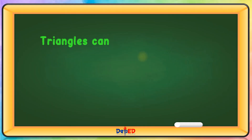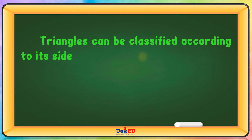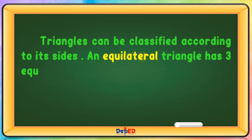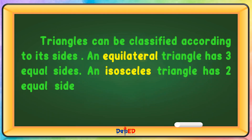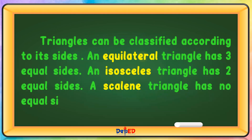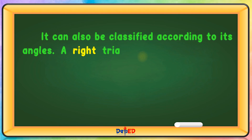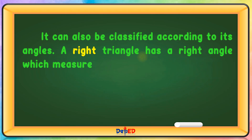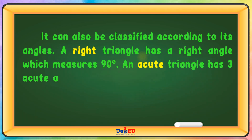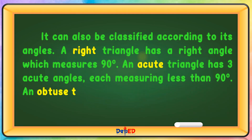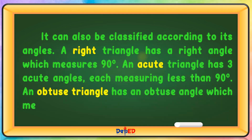Triangles can be classified according to its sides: an equilateral triangle has three equal sides, an isosceles triangle has two equal sides, and a scalene triangle has no equal sides. It can also be classified according to its angles: a right triangle has a right angle which measures 90 degrees, an acute triangle has three acute angles each measuring less than 90 degrees, and an obtuse triangle has an obtuse angle which measures more than 90 degrees.